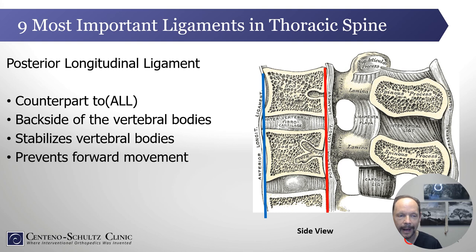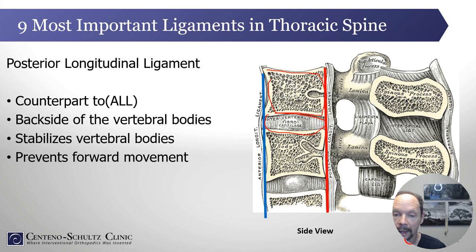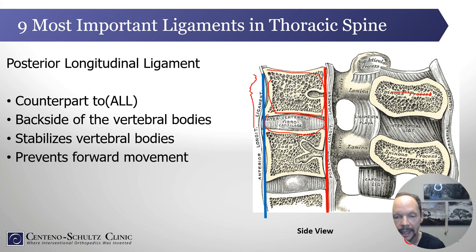It has a counterpart known as the posterior longitudinal ligament, or PLL. It sits on the back side of the vertebral body and like the anterior longitudinal ligament it stabilizes the vertebral bodies. Here's an illustration — this is the side view. These are the vertebral bodies with discs in between each one. On the backside are the spinous processes — the dinosaur bone you feel on your loved one's back. On the front is the anterior longitudinal ligament, and on the backside is the PLL, a critical stabilizer of the thoracic spine.